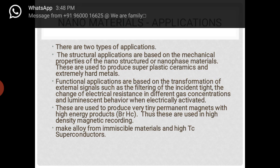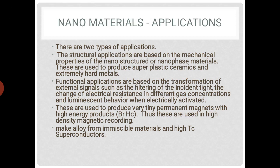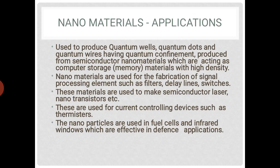Functional applications are based on the transformation of external signals, like filtering of light, change of electrical resistance in various gas concentrations, and luminescent behavior when electrically activated. This is used to produce tiny permanent magnets with high energy product (Br × Hc), and they are used in high-density magnetic recording, high-temperature superconductors, and to produce quantum wells, quantum dots, and quantum wires with high quantum confinement.